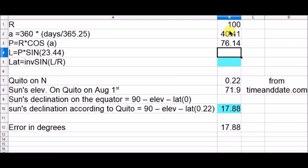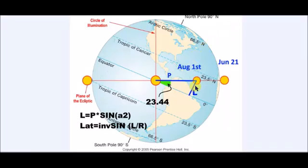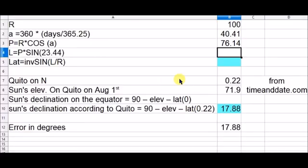Now the L, the L, the L equals the P by the sine of this angle, 23.44. So L equals P by sine, where's the P? Here is the P.